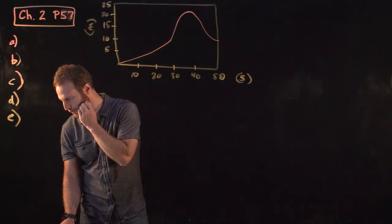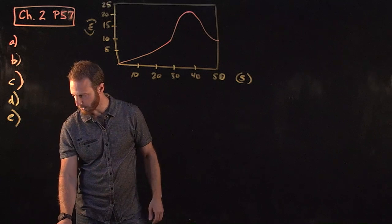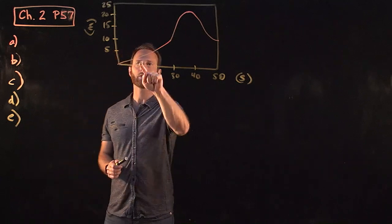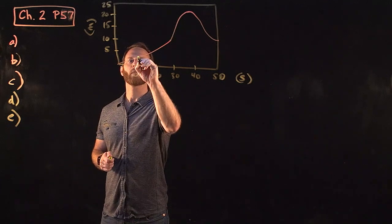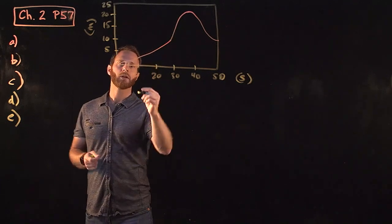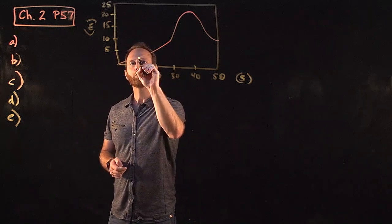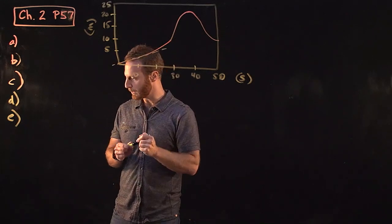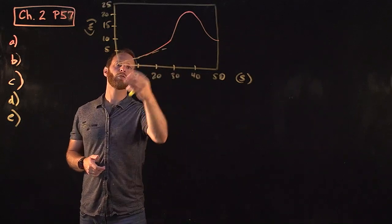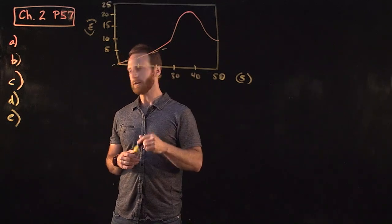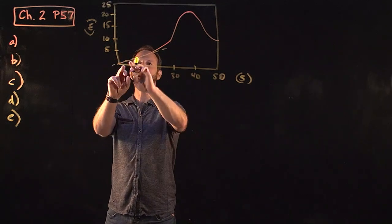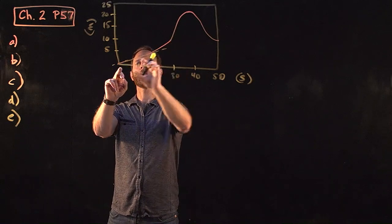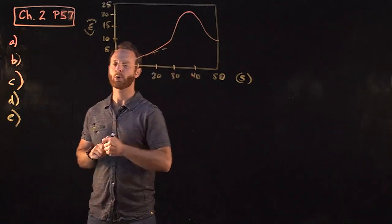If we're finding the instantaneous velocity at 10 seconds, that's roughly here. The instantaneous velocity is the slope of the line that would just graze the graph at this point. The good news is that this curve is basically straight at this point, so we can estimate the slope by figuring out the rise over the run here.